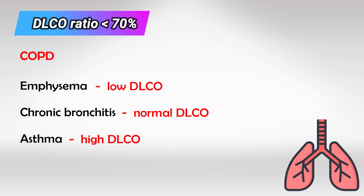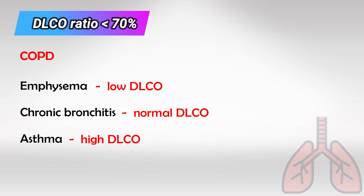DLCO is low in emphysema because the alveoli are damaged and the surface area is greatly reduced, so diffusion of carbon monoxide is also decreased. Chronic bronchitis mainly affects the bronchus and doesn't affect diffusion per se. Asthmatic patients have chronic shortness of breath, so their lungs will be hypervascularized — more surface area and more diffusion — and that's why we have high DLCO in asthma.